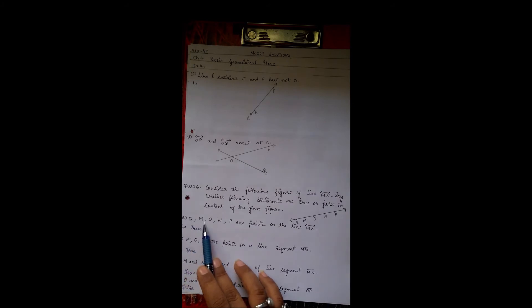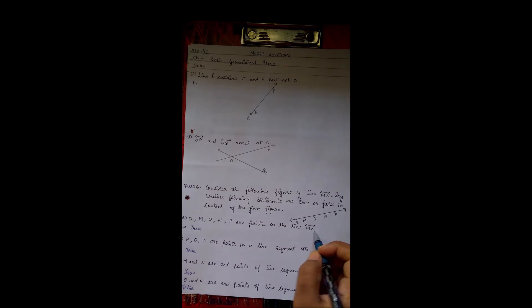First question is: Q, M, O, N, P are points on the line MN. That is true. M, O, N are points on the line segment MN. That is also true. M and N are the end points of line segment MN. That is also true.